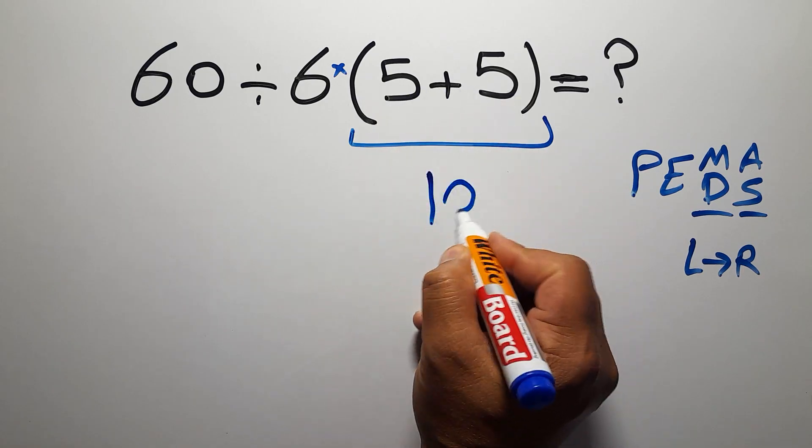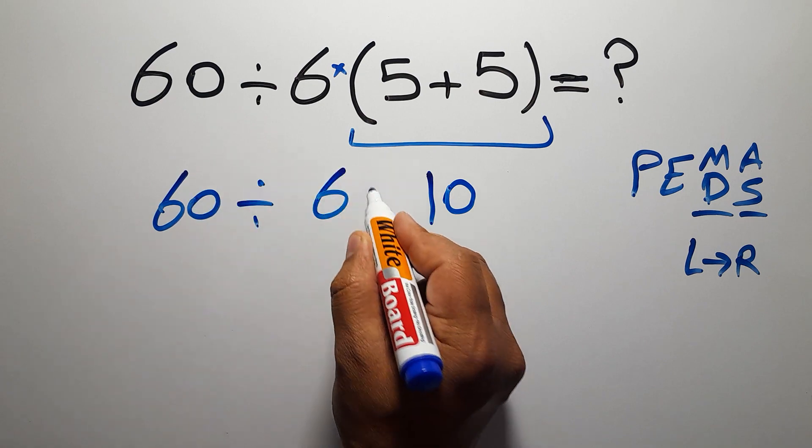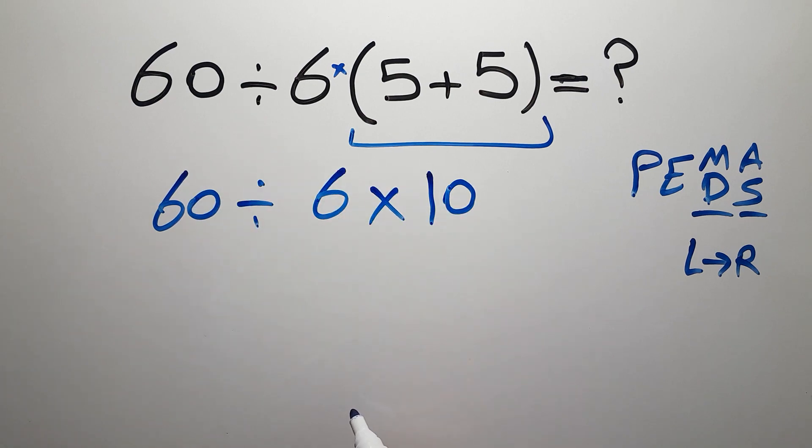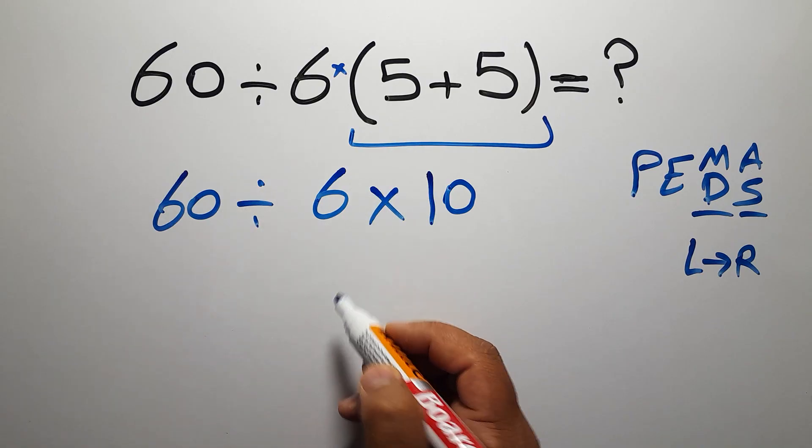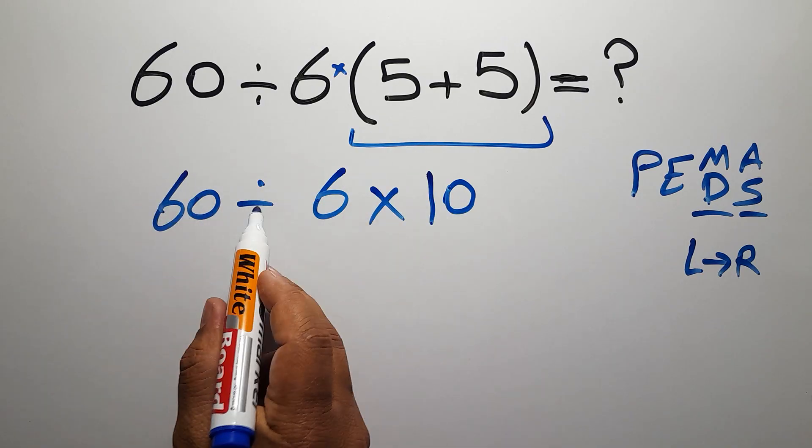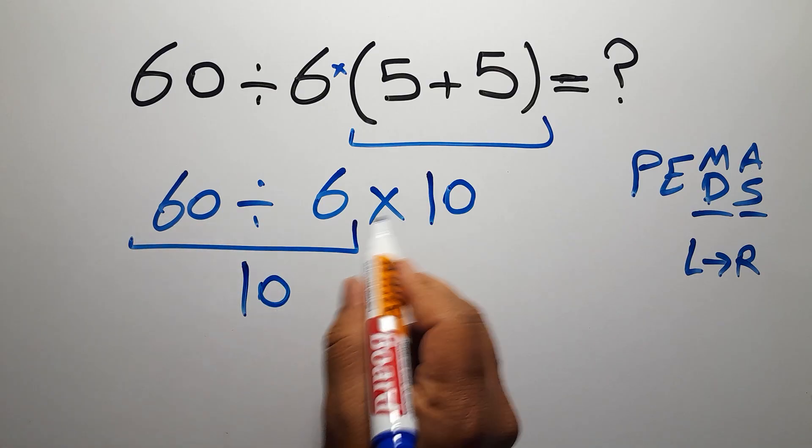Now we have one division and one multiplication. We have to work from left to right. 60 divided by 6 gives us 10, so 10 times 10 is just 100.